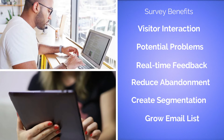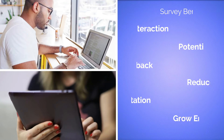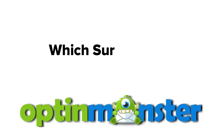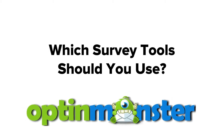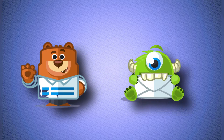Now, if you'd like to know the best practices, see sample questions, get details about building the best online survey, and more, then be sure to check out the links that we've left in the description. The best way to create an online survey in WordPress is to combine the power and flexibility of WPForms and OptinMonster.